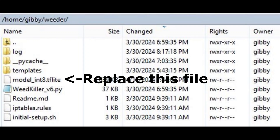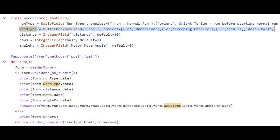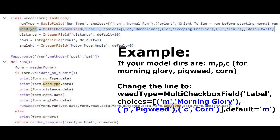Now change one line of code in the WeedKiller script — the highlighted line. Currently it has 'Dandelion' and 'Creeping Charlie Leaf' from my original model. Replace those with your own folder names and display names. The left side of each entry is the folder name from your sorted directory; the right side is the pretty name that shows up in the browser at weeder.local/run. Change that one line, restart your weeder, go to weeder.local/run, and it will show your new weeds. You can select from the new weed classes in your model and set your weeder loose.